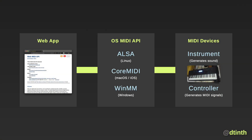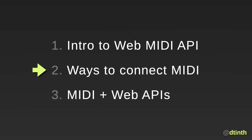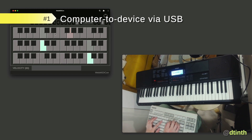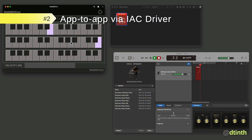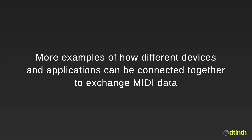As you can see, there are many ways that applications and MIDI devices can communicate with each other, and this brings us to the second part: ways to connect MIDI. So far we have seen two ways — first, using a USB cable to communicate with a physical MIDI device, and second, using the IAC driver to communicate between apps on the same computer. I'll show you more examples of how different devices and applications can be connected together to exchange MIDI data.